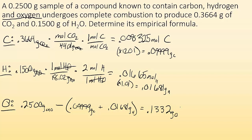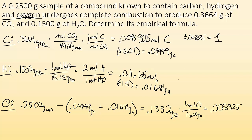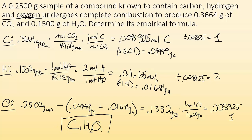Now convert grams of oxygen to moles: 0.1332 grams divided by 16.00 grams per mole gives 0.008325 moles of oxygen. Now for the last step, divide by the smallest number of moles, which is 0.008325. Carbon: 0.008325 ÷ 0.008325 = 1. Hydrogen: 0.01665 ÷ 0.008325 = 2. Oxygen: 0.008325 ÷ 0.008325 = 1. So the empirical formula is CH2O — it's a carbohydrate.